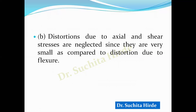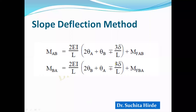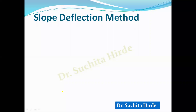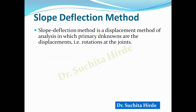In the slope deflection equation, these rotations are called primary unknowns, because unless we calculate these thetas we cannot calculate the final moment. Slope deflection method is a displacement method, because primary unknowns are displacements. All methods in structural analysis — slope deflection, moment distribution, Kani's method, stiffness matrix method — can be grouped into two categories: force method and displacement method. Slope deflection is a displacement method.